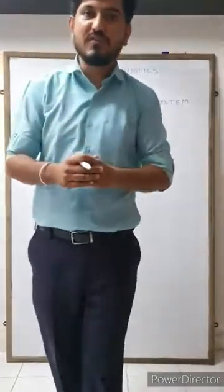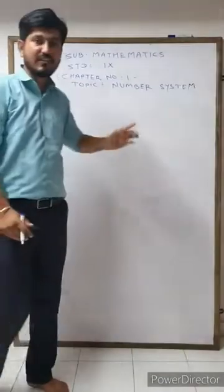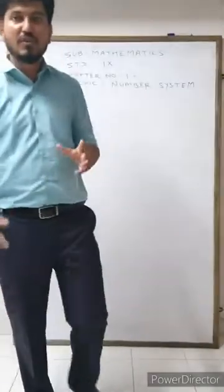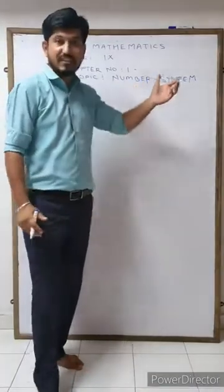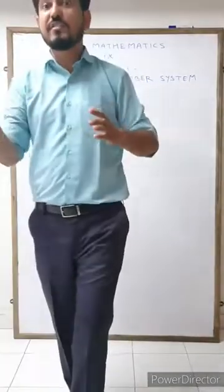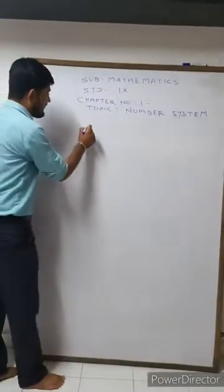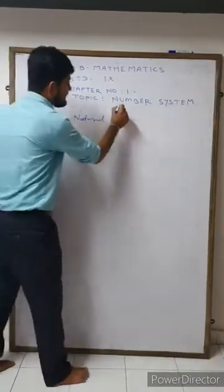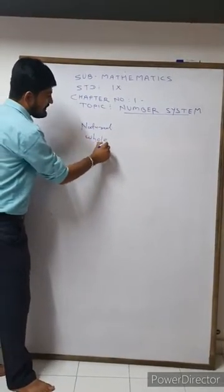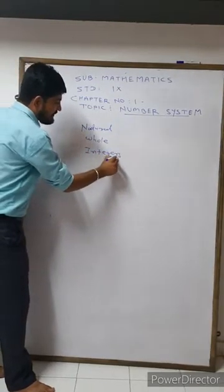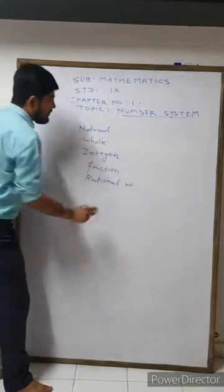Good morning students, today we are going to start standard nine mathematics, Chapter number one: the Number System. You studied all the types of numbers in your lower classes, so again we'll discuss the number system in ninth standard. We'll discuss all types of numbers — natural numbers, whole numbers, integers, fractions — all the types of numbers we have to study here, and this is known as our number system.